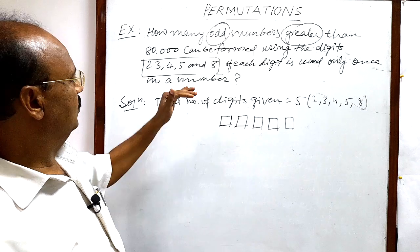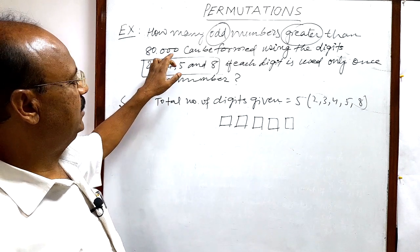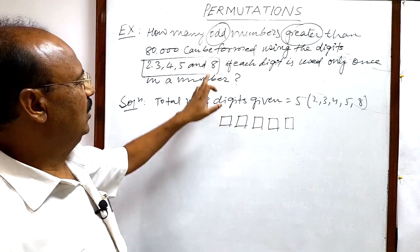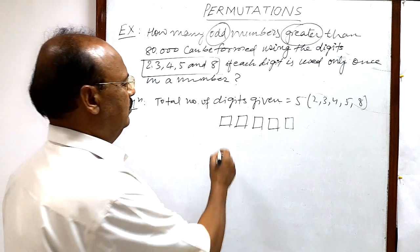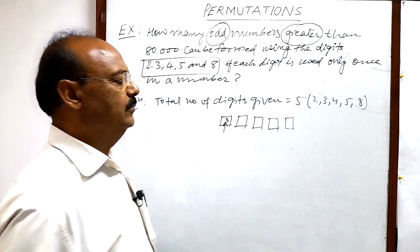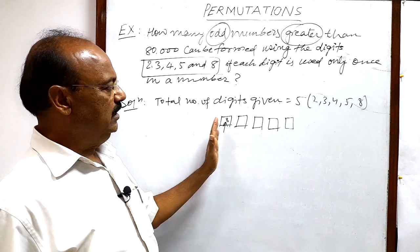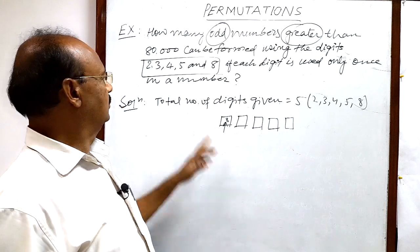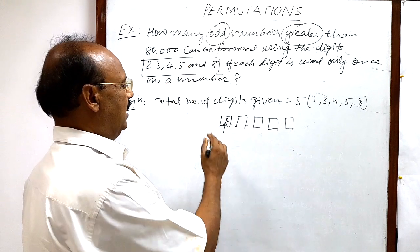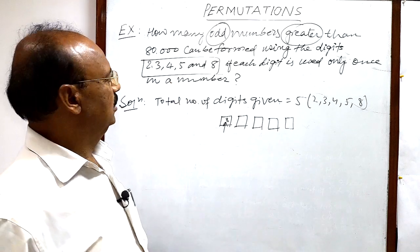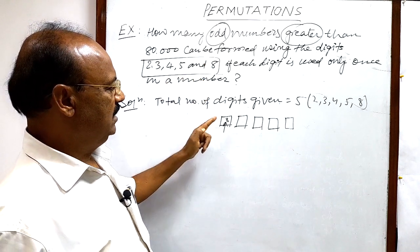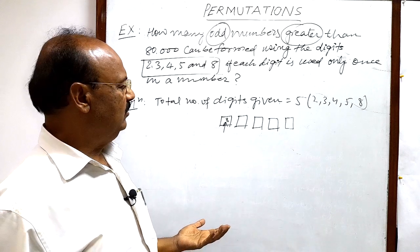But the number should be greater than 80,000. So in this place, we have only one option - that will be filled with 8. Then only will numbers be greater than 80,000. And how many options we have? We are having only one option, because we have 8 here, one digit which has to be filled here. So we are having only one option, no other option.